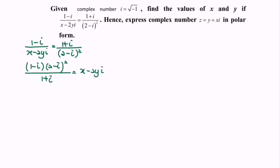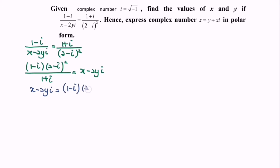So kindly focus on the left hand side. Expand the 2 minus i squared. So x minus 2yi is equals to 1 minus i bracket, 2 minus i multiply with 2 minus i, over 1 plus i.